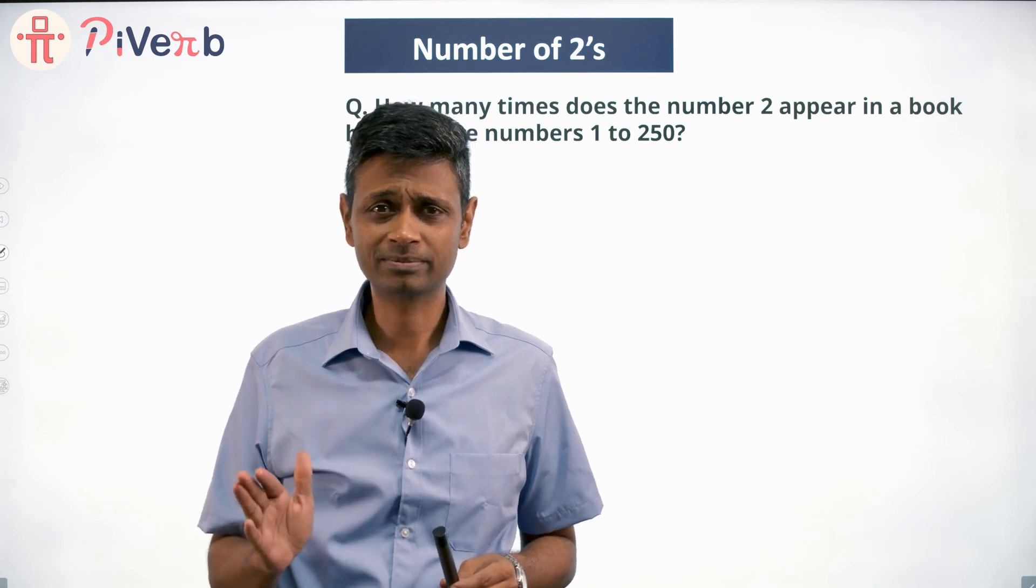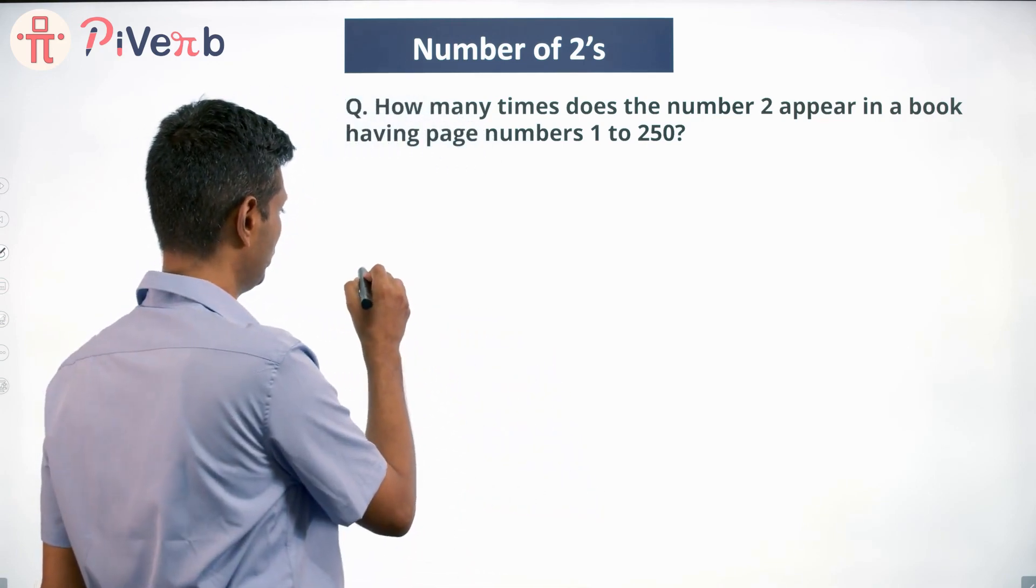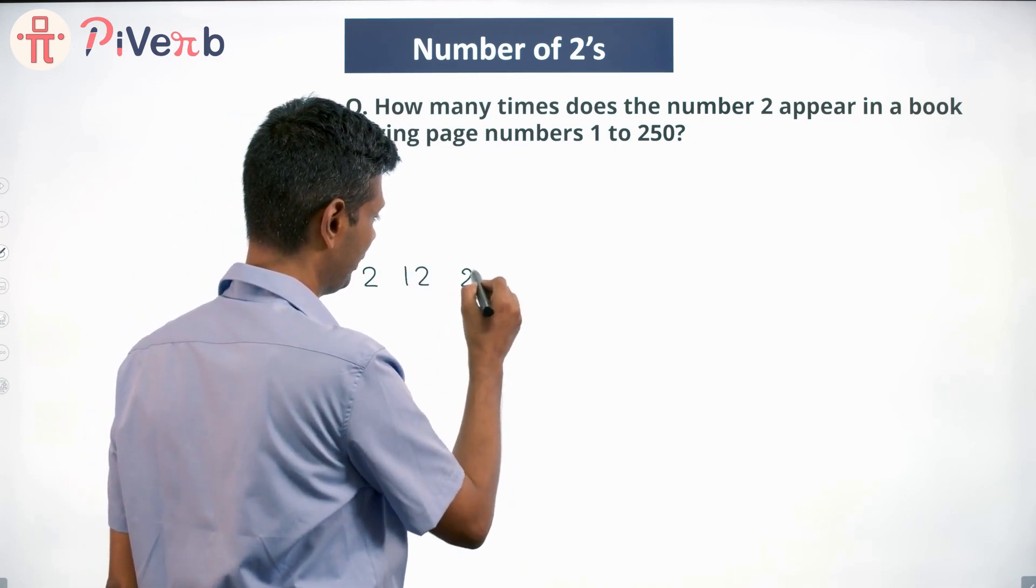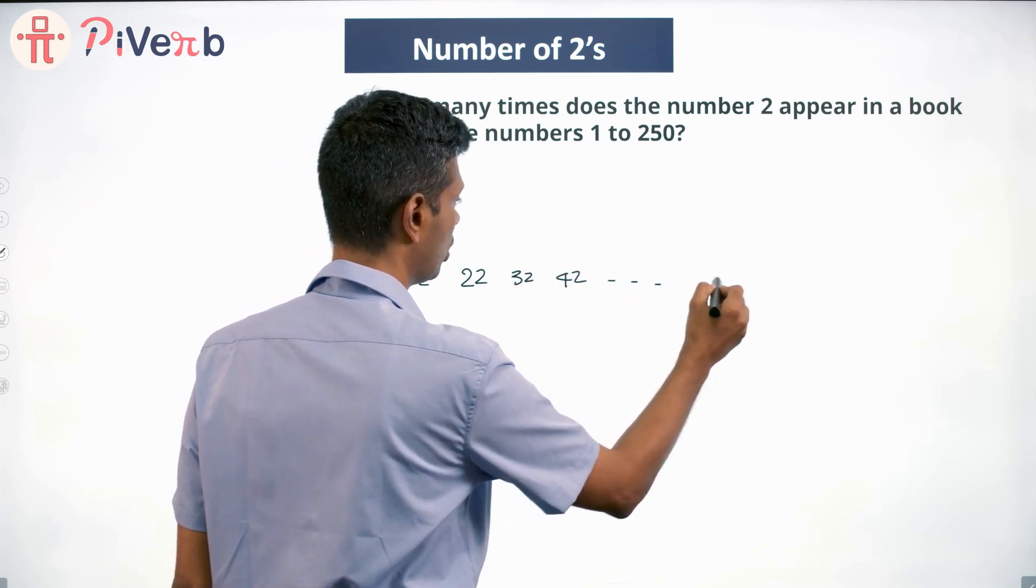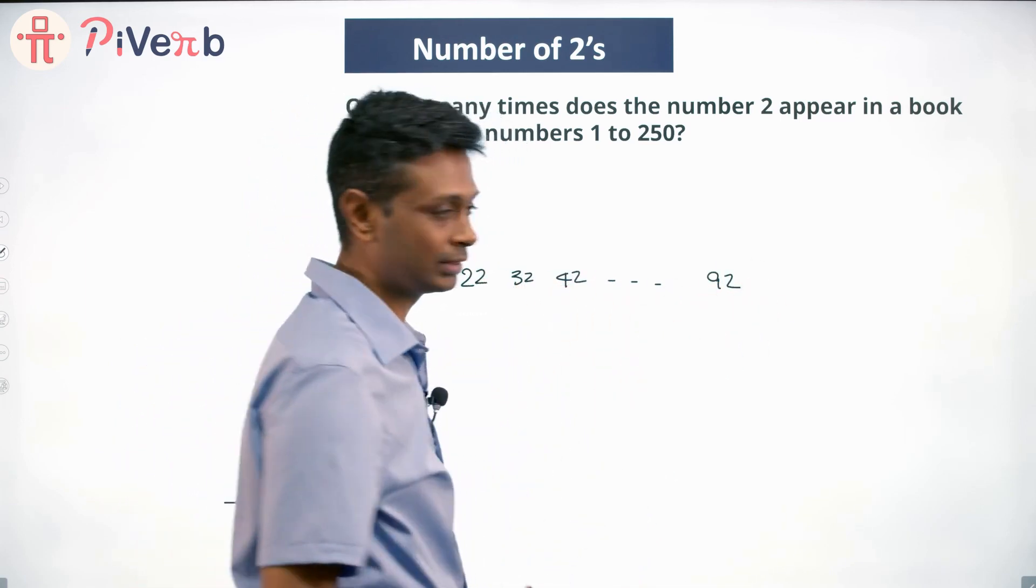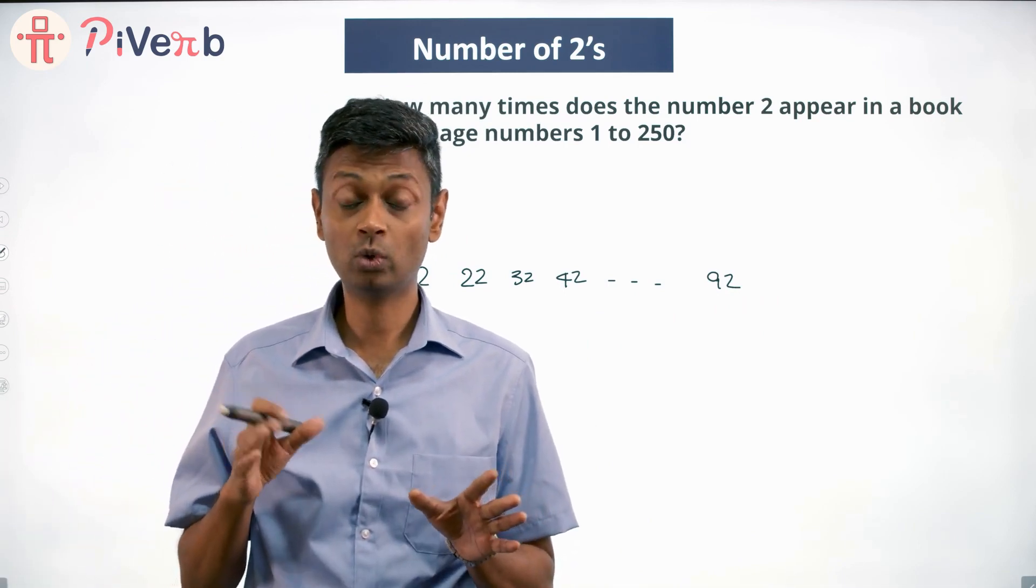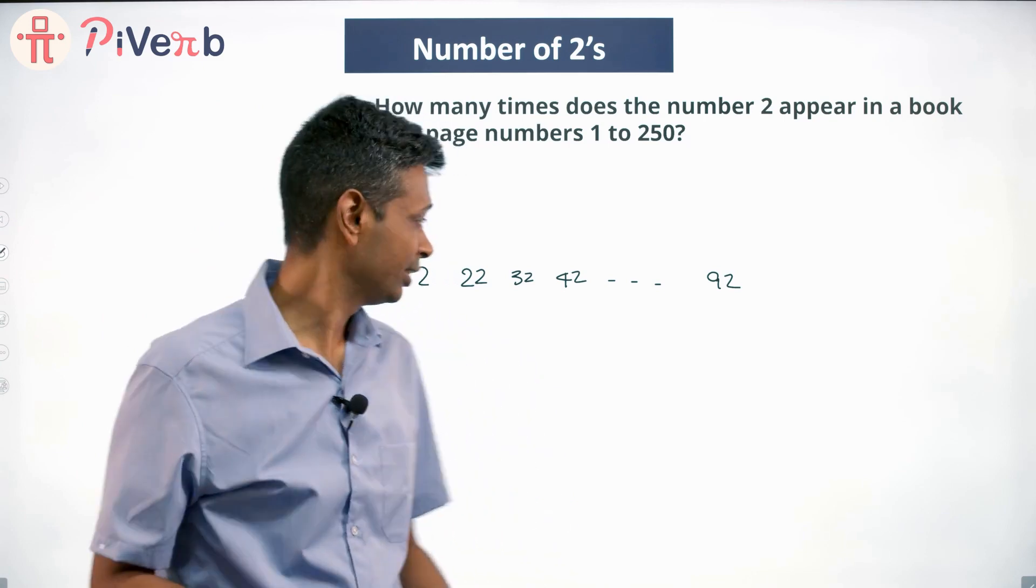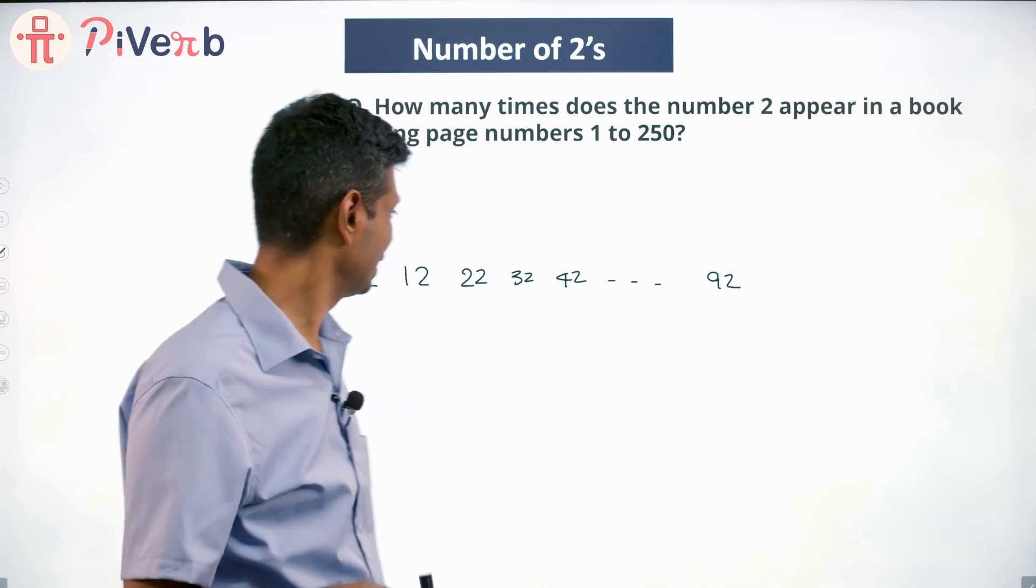It appears at 2. After that it will appear at 12, then 22, 32, 42, all the way till 92. I'm counting all numbers from 1 to 100. I can think of single digit numbers and two digit numbers. So 2, 12, 32, 42, all the way till 92.